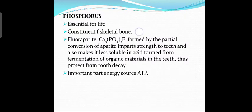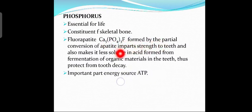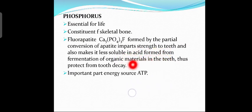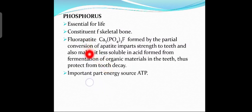Phosphorus is also essential for life. It is a constituent of skeletal bone. Fluorapatite is formed by the partial conversion of hydroxyapatite and imparts strength to teeth. Fluorapatite makes teeth less soluble in acid formed from fermentation of organic materials, and thus protects the teeth from decay. Phosphorus is also an important part of the energy source ATP, which is adenosine triphosphate.